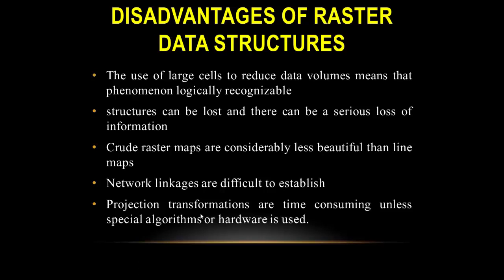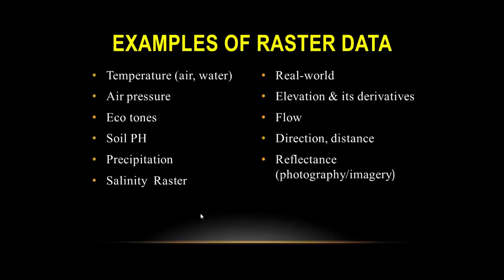Examples of raster data include: temperatures in water bodies, pressure, echo tones, soil pH, precipitation, salinity, real-world elevation and its derivatives such as flow direction, distance, reflection, and photographic imagery.